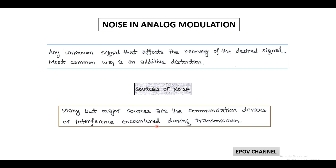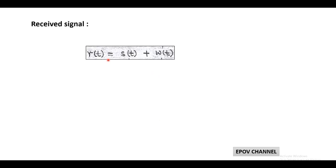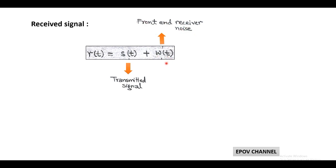Generally the received signal in analog modulation is a function of time, and is the combination of transmitted signal S(t) and W(t), which is called front end receiver noise. The noise is called additive white Gaussian noise. So the received signal is denoted by R(t) = S(t) + W(t).